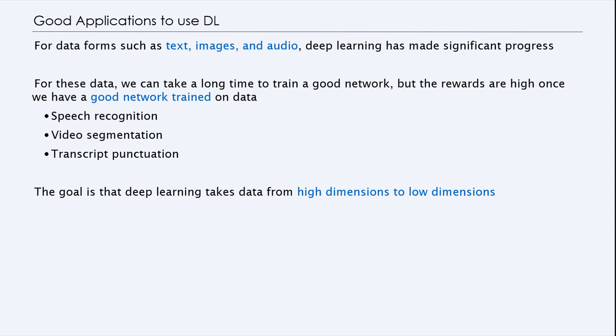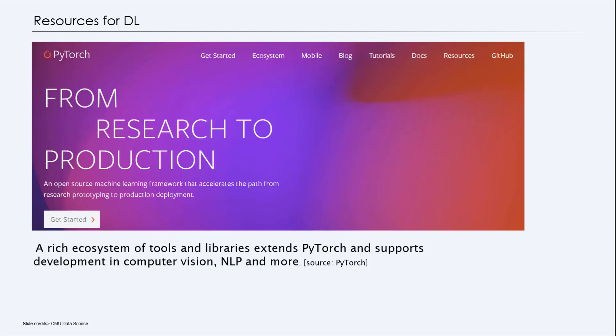So the goal is that deep learning takes data from high dimension to lower dimension, and that's important. So resources for deep learning include something like PyTorch. It's a rich ecosystem of tools and libraries that extends PyTorch and supports the development in computer vision and NLP and more.